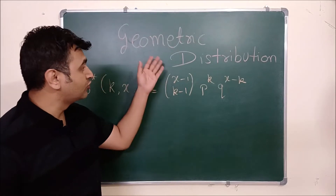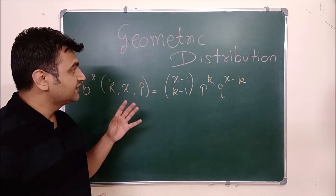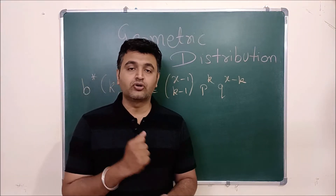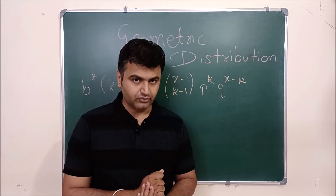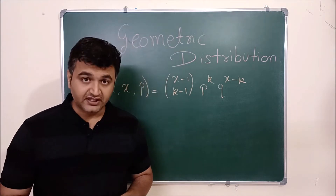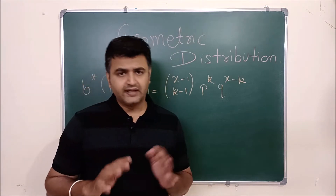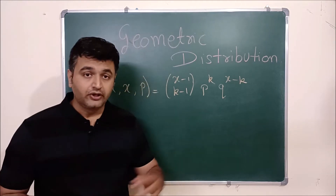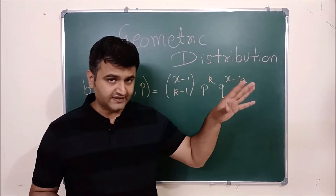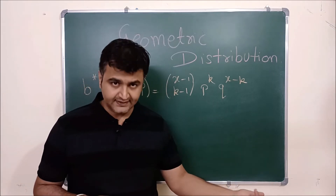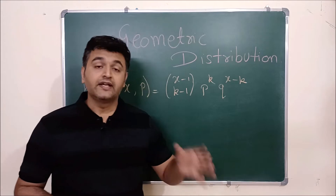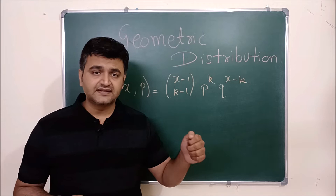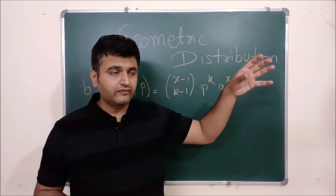Today we are going to talk about geometric distribution. It's a very special case of negative binomial distribution. In earlier lectures we talked about negative binomial distribution - you can find the link in the description. Negative binomial and binomial distributions are almost the same except one condition. In binomial distribution you do n number of trials where n is fixed.